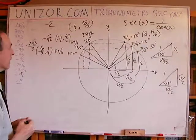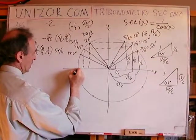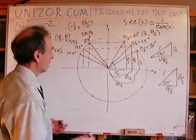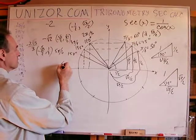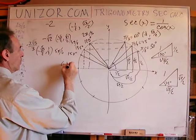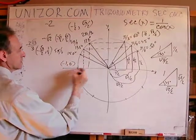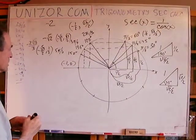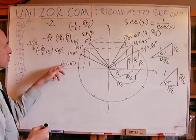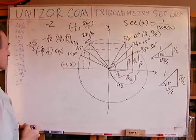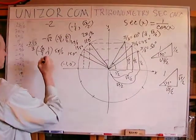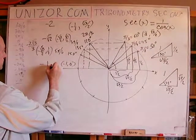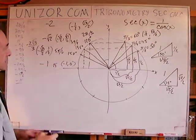Next, π — or 180 degrees. For this one you don't need to resort to symmetry. The coordinates of this point are simply (−1, 0). The cosine, which is the abscissa, equals −1, so the secant is 1 over −1, which equals −1.